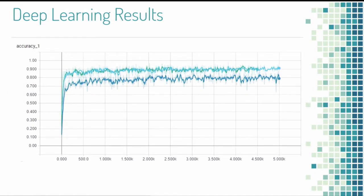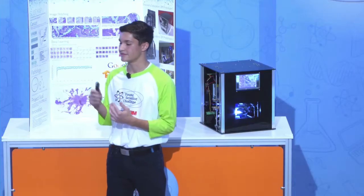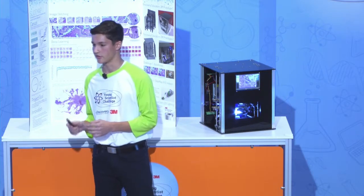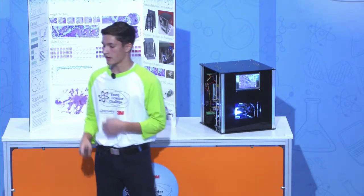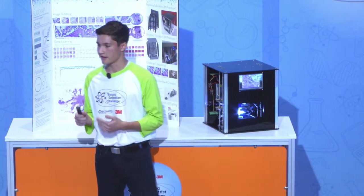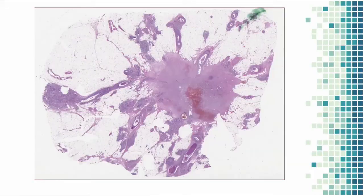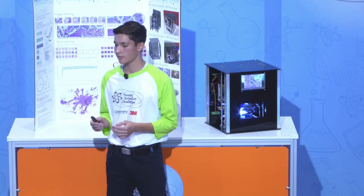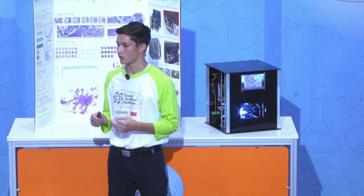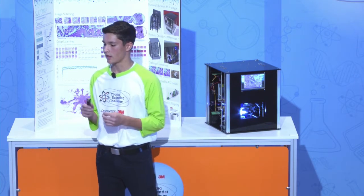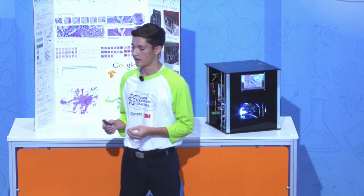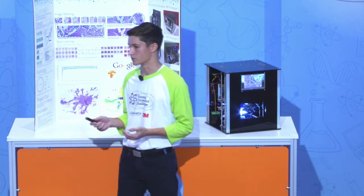This is a graph of the accuracy of my neural network. Off of limited training data, I was able to achieve 90% accuracy. By combining low-cost slide scanning technology with a deep learning image classifier, I'm able to produce a map of cell types to provide a second opinion for expert pathologists, as well as be an accurate primary source of diagnosis in developing countries.